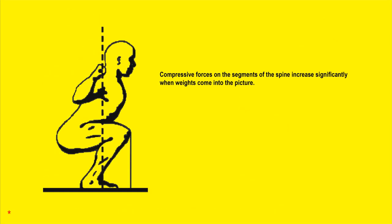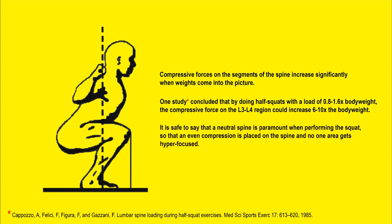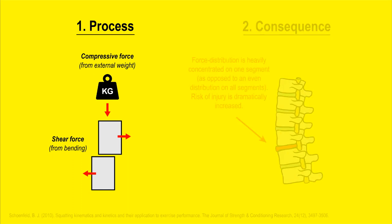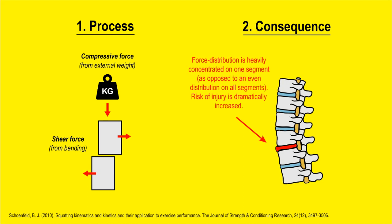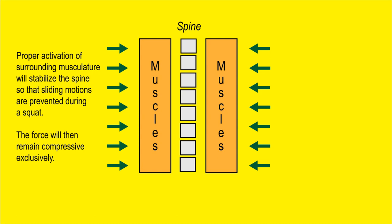To grasp the importance of sliding motions combined with compressive forces on the spine, look at this study: by only doing half squats with a load of 0.8 to 1.6 times body weight, compressive forces on the L3-L4 region could increase by 6 to 10 fold the body weight. A neutral spine is paramount when performing a squat so that even compression happens. As long as we tighten the correct musculature and our back remains neutral, we can handle very heavy loads — because the force is evenly distributed and the body works as a whole.